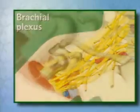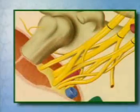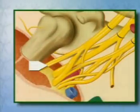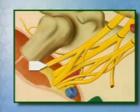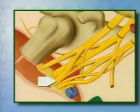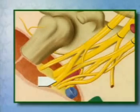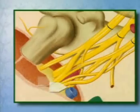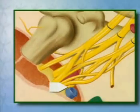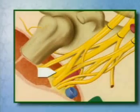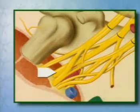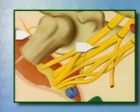The nerves that extend to the arm arise from the cords: the musculocutaneous nerve from the lateral cord, the median nerve from the lateral and medial cords, the ulnar nerve from the medial cord, and finally the radial and axillary nerves from the posterior cord.